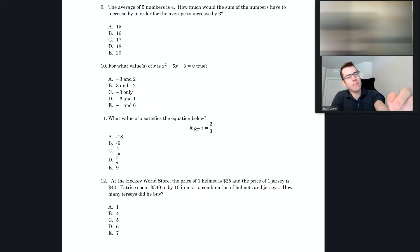Okay, so you're not sure about number nine. Let's take a look at it. It says the average of five numbers is four. How much would the sum of the numbers have to increase by in order for the average to increase by three?